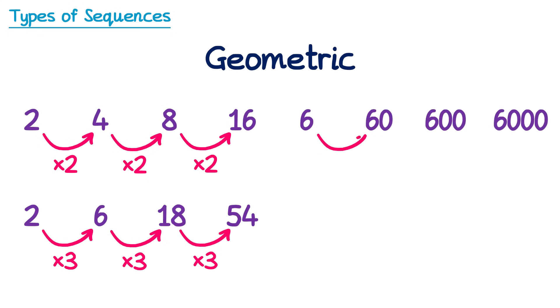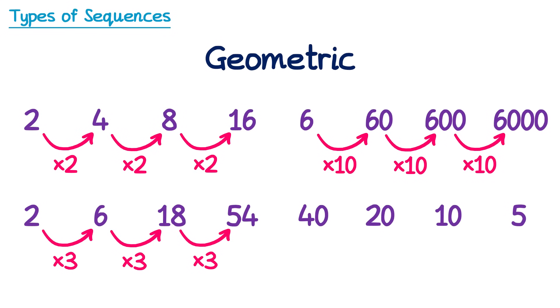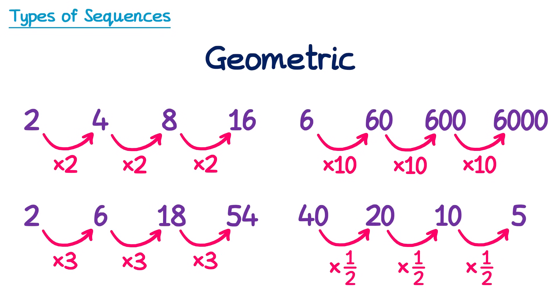This sequence — 6, 60, 600, 6000 — is geometric too, multiplying by 10 each time. This next sequence, 40, 20, 10, 5, is also geometric but might not be as obvious. To get from 40 to 20 you divide by 2, and the same for 20 to 10 and 10 to 5. Dividing by 2 can also be seen as multiplying by one half — so this still fits the rule of a geometric sequence. You may find it easier to remember that a geometric sequence is multiplying or dividing to get the next term.